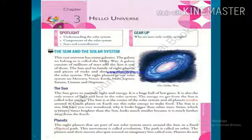What is a solar system? The sun and its family of eight planets and pieces of rocks and dust together form the solar system. The eight planets in our solar system are Mercury, Venus, Earth, Mars, Jupiter, Saturn, Uranus and Neptune.